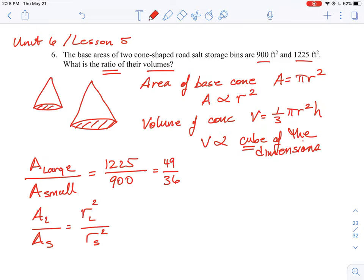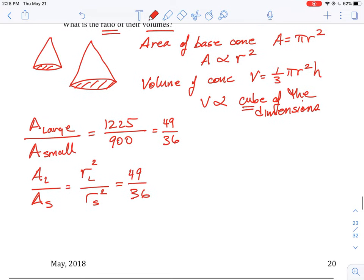I'm just going to use L for r for large and then S for small—is equal to the radius of the large object squared all over the radius of the small object squared.